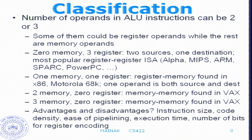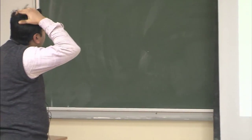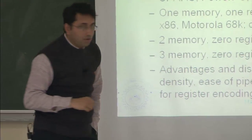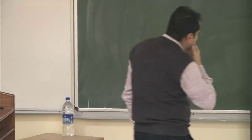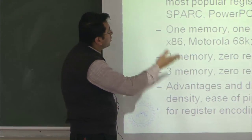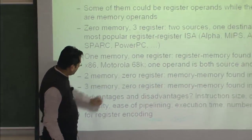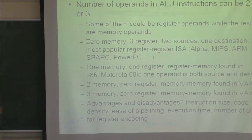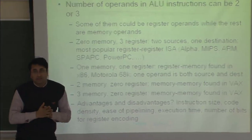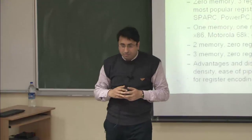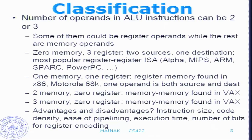We are discussing instruction set architecture. Last time we talked about basic definitions and stopped at classifying instructions based on number of operands — three register operands, zero memory operands, one memory one register, two memory zero register, three memory zero register, and so on. The main point was that if you want a memory operand, you have to encode at least one memory address in the instruction. A memory address is typically large — 32 bits or 64 bits — so that makes the instruction size large.